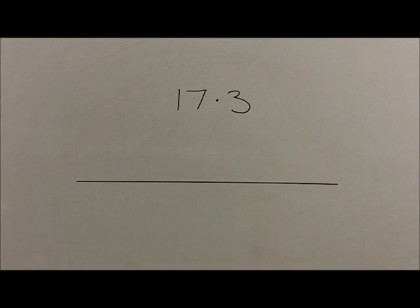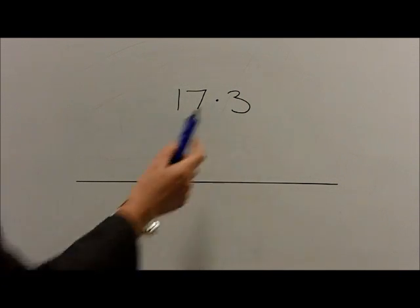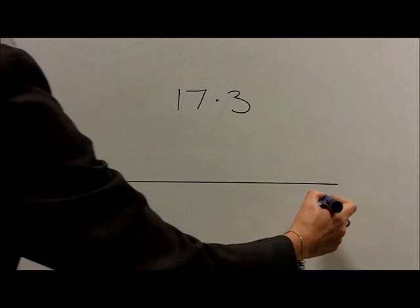children need to decide which two whole numbers the number lies between. For example, with the number 17.3, this lies between 17 and 18.